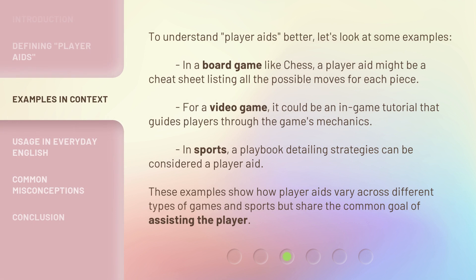To understand player aids better, let's look at some examples. In a board game like chess, a player aid might be a cheat sheet listing all the possible moves for each piece. For a video game, it could be an in-game tutorial that guides players through the game's mechanics.